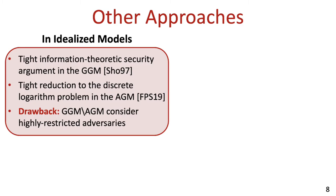It should be mentioned that not all proofs of security for Schnorr's schemes go through a standard model reduction to the D-log problem. One option that has been explored is to prove the security of these schemes in idealized models. In the generic group model, Shoup proved the tight information-theoretic lower bound on the advantage of any generic attacker, and in the algebraic group model, Fuchsbauer, Poulidor, and Seurin recently proved a tight reduction to the D-log problem.